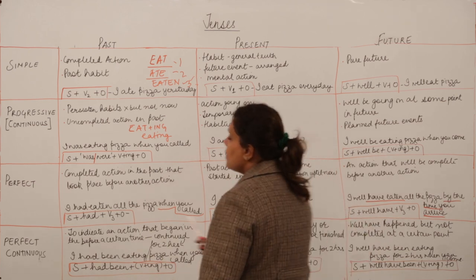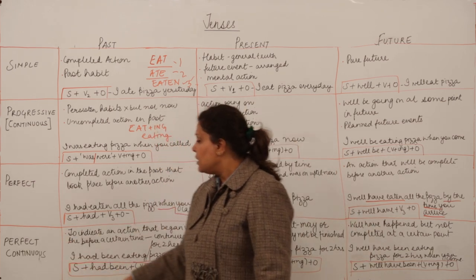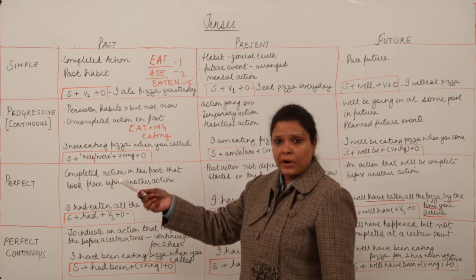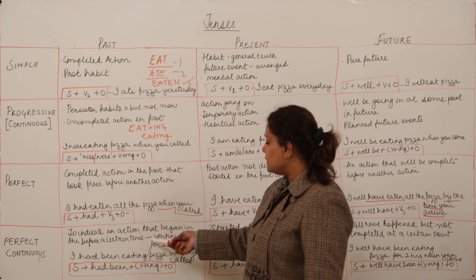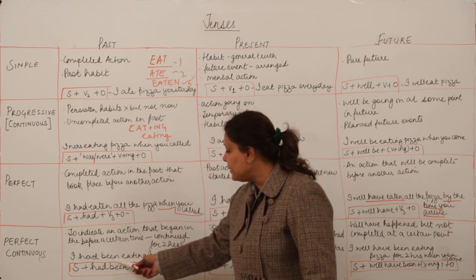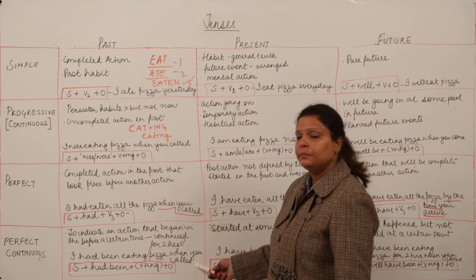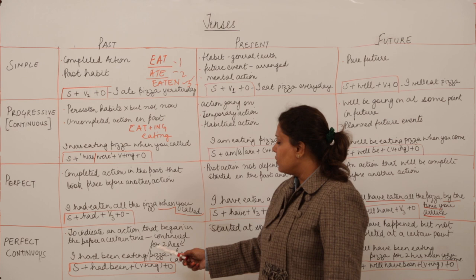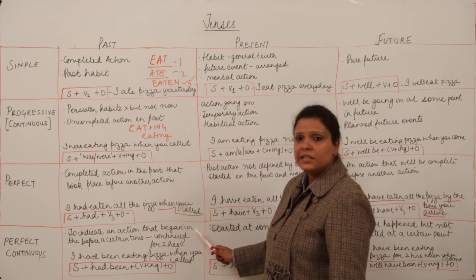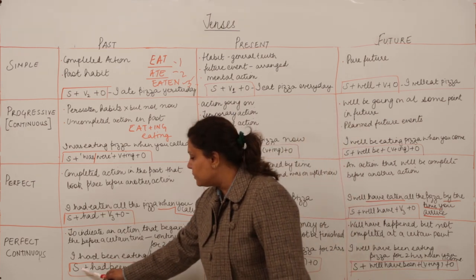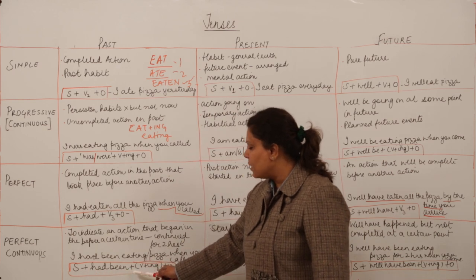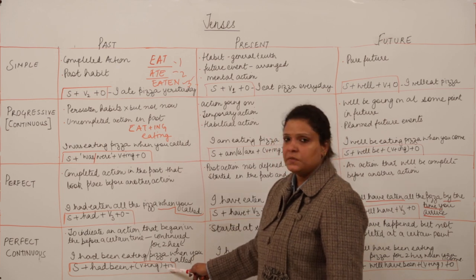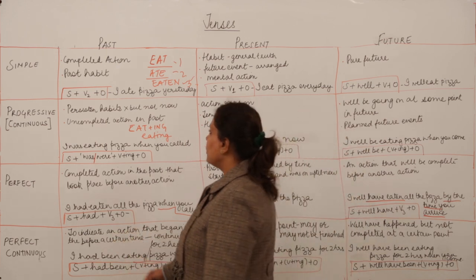The last tense group is the perfect continuous tense. The past perfect continuous is used to indicate an action that began at a certain point in the past and was still continuing. For example, 'I had been eating pizza when you called' — when he called, the action had been going on for two hours. When the period or duration is important, we use this tense. The form is: subject + had been + verb -ing form (eating) + object.